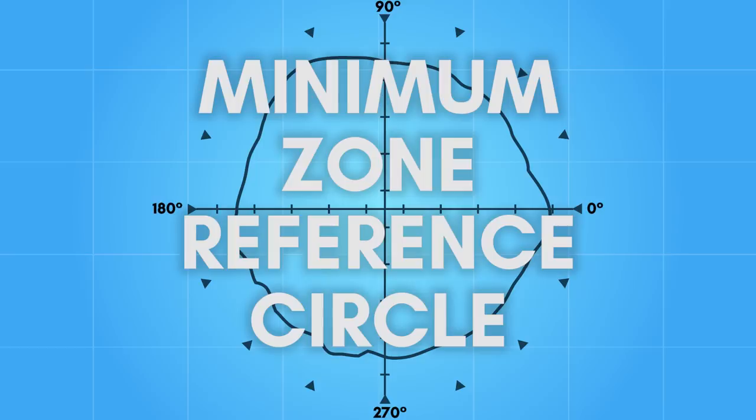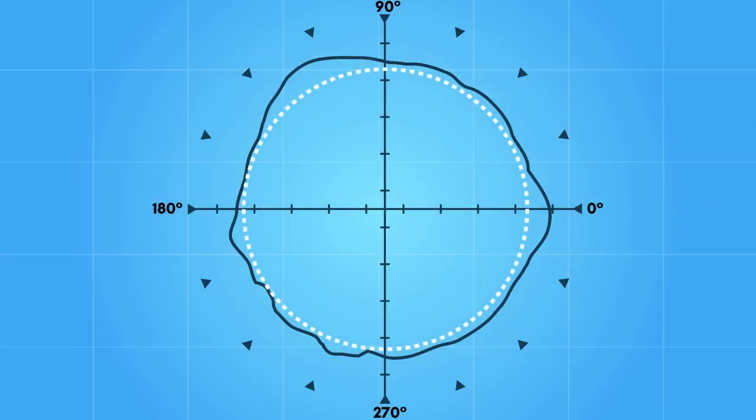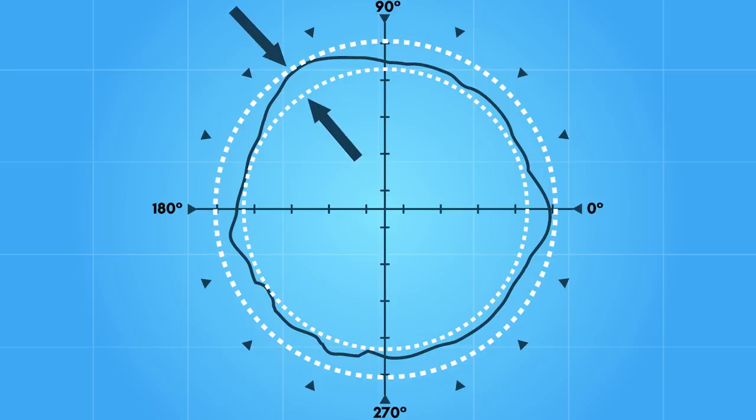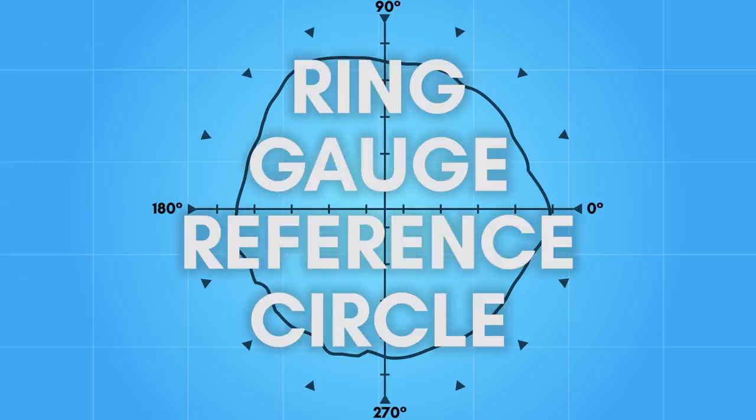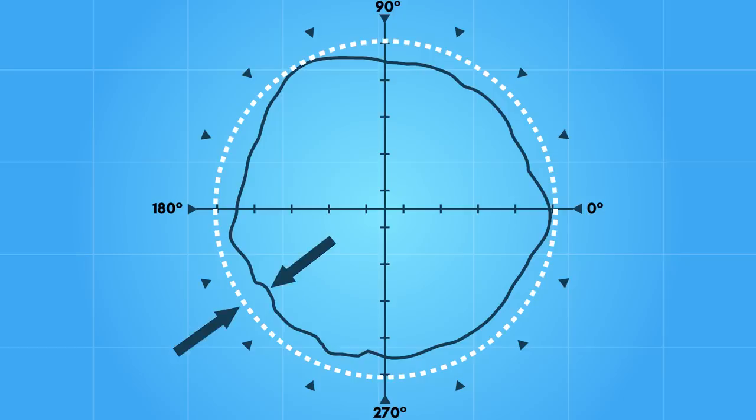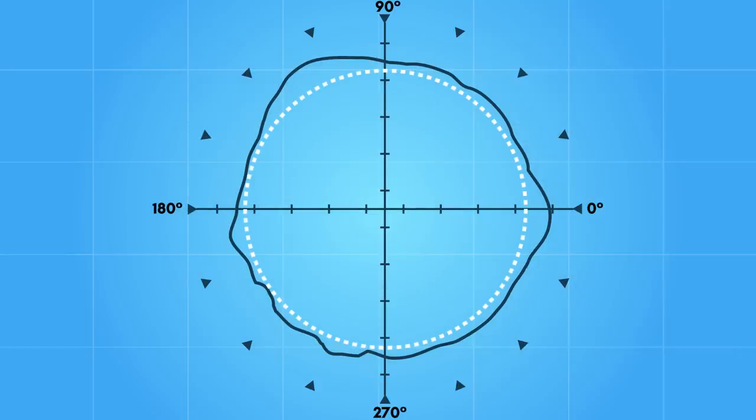A minimum zone reference circle is derived by first calculating the smallest circle that can fit inside of the measured data. Next, the smallest circle that can encompass the measured data is calculated. The out of roundness is given by the radial separation between these two circles that enclose the data. A minimum circumscribed reference circle, sometimes known as the ring gauge reference circle, is the smallest circle that totally encloses the data. Out of roundness is quantified as the largest deviation from this circle. A maximum inscribed reference circle is the largest circle that can be enclosed by the data. The out of roundness is quantified as the maximum deviation of the data from this circle. This is sometimes known as the plug gauge reference circle.